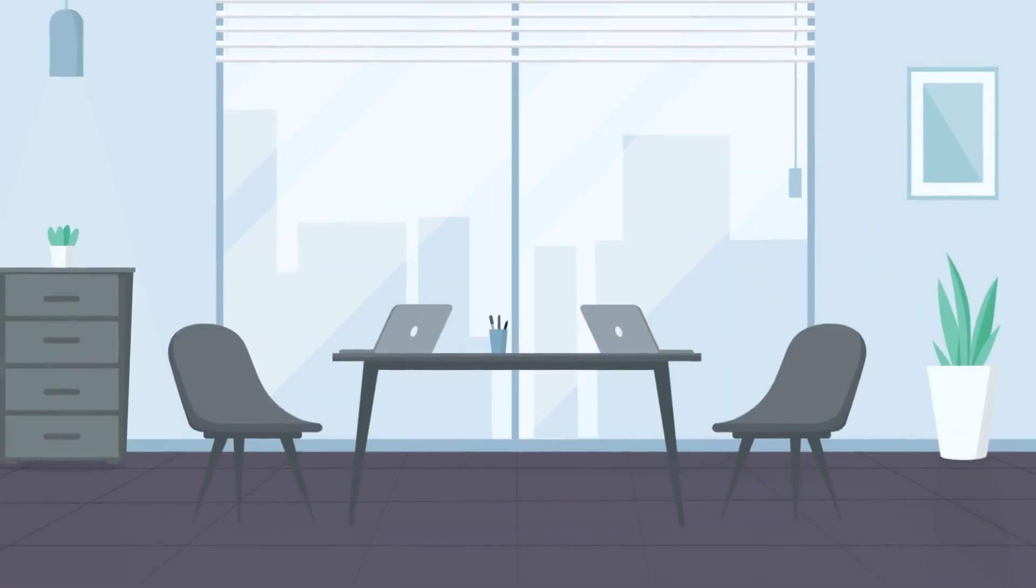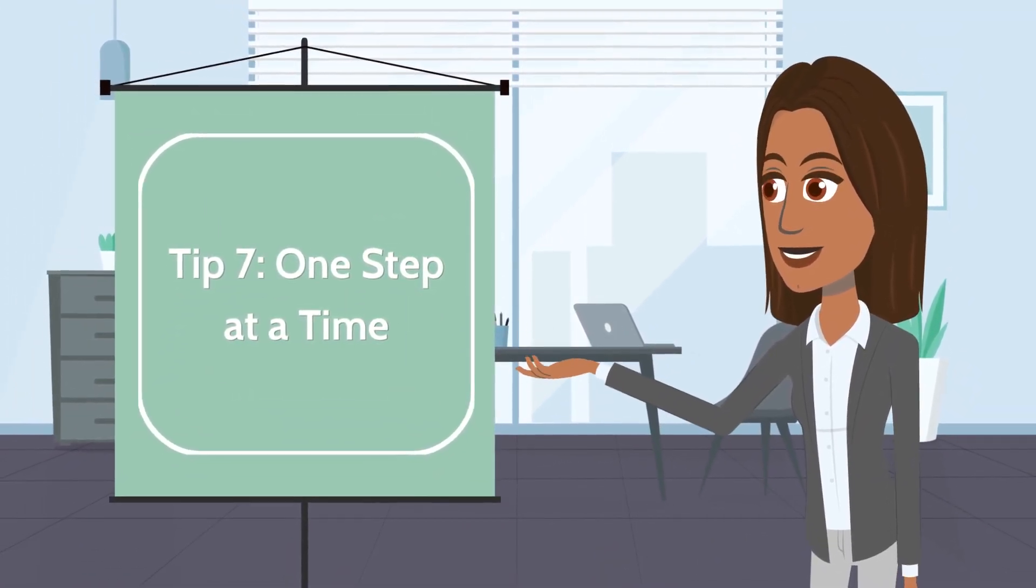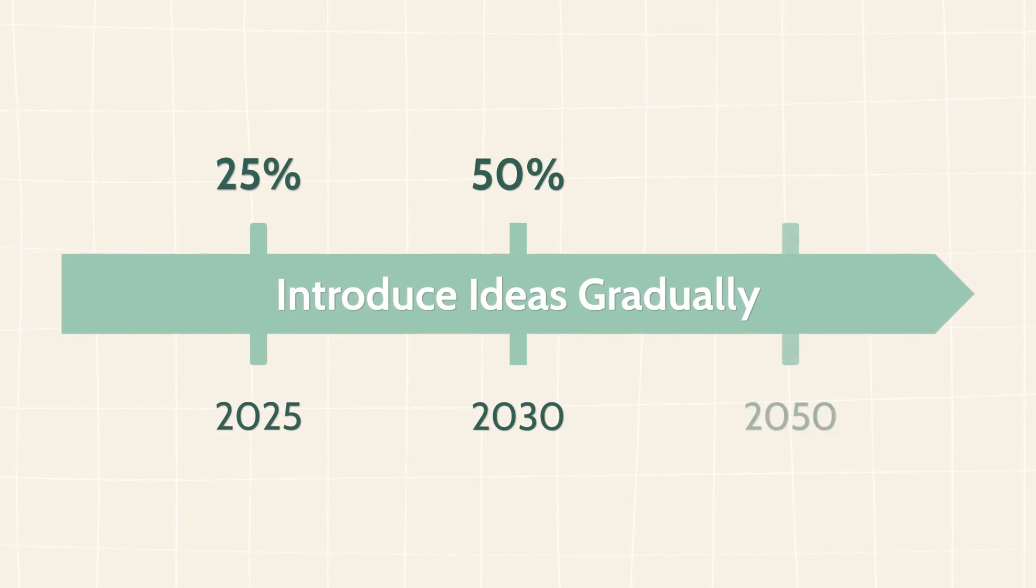Tip 7: One step at a time. Major change is overwhelming. Introduce ideas gradually, and try to connect new actions to something people are familiar with.